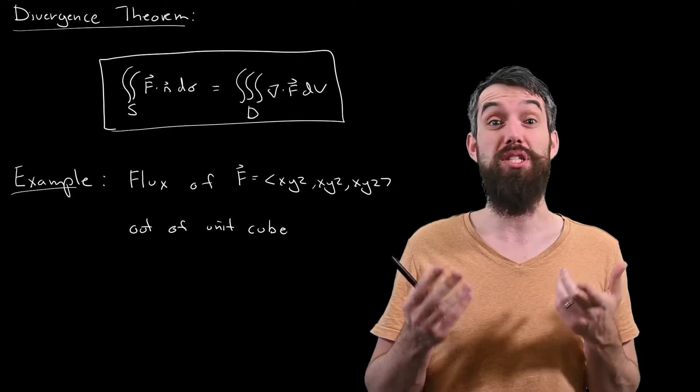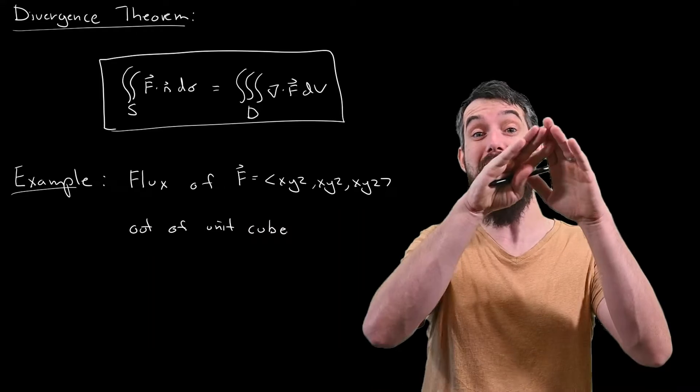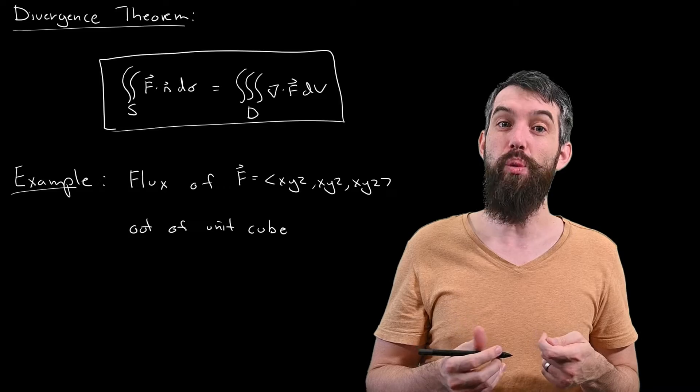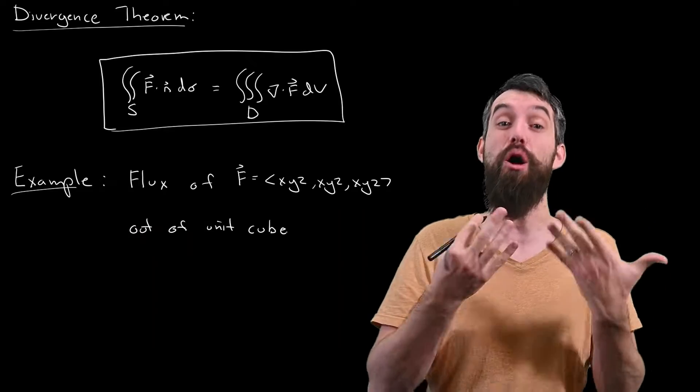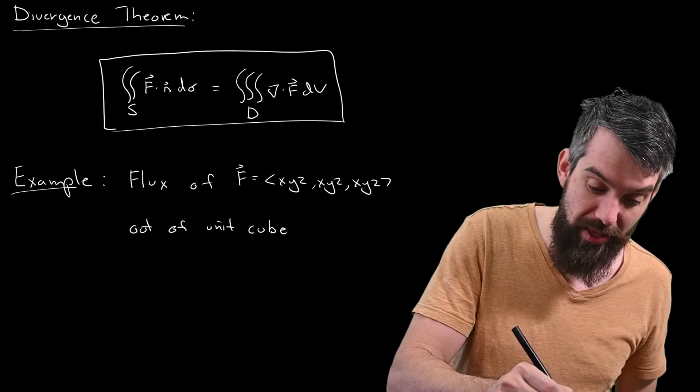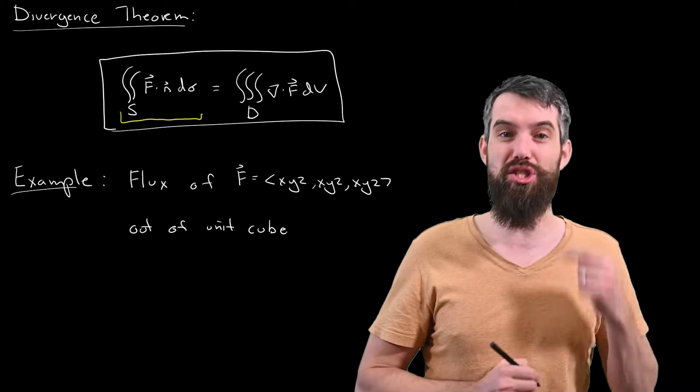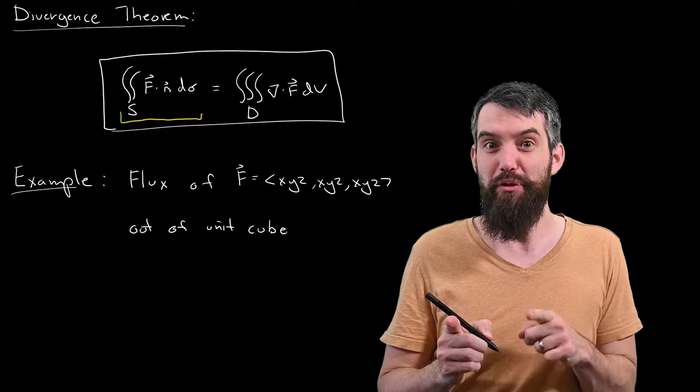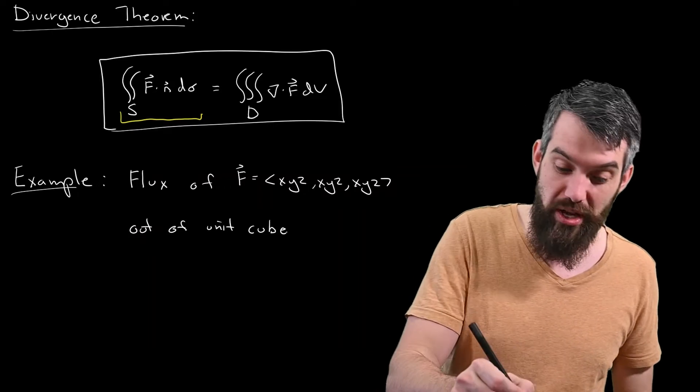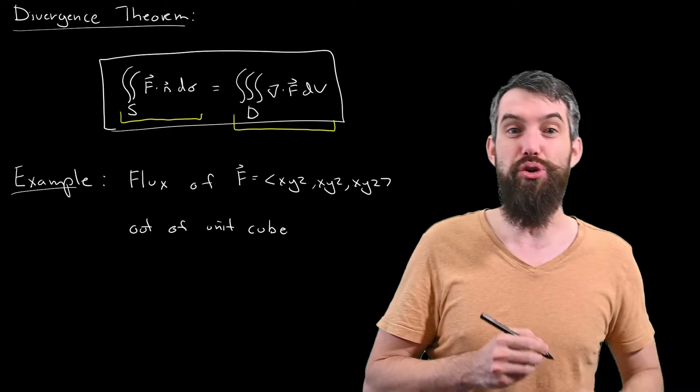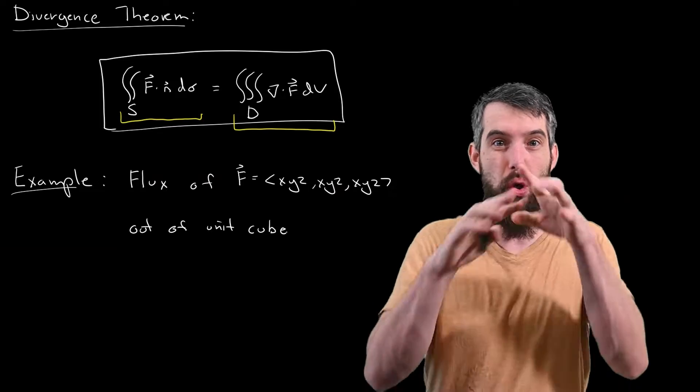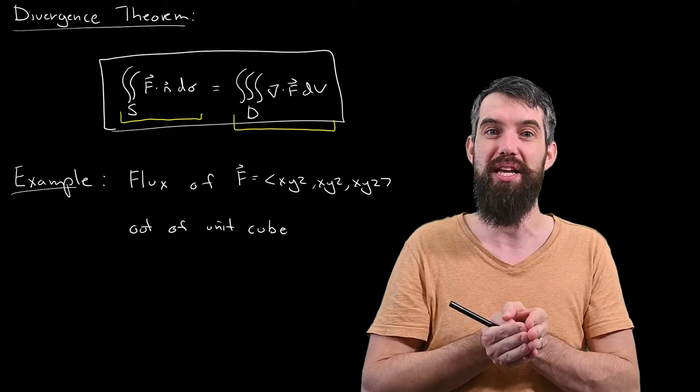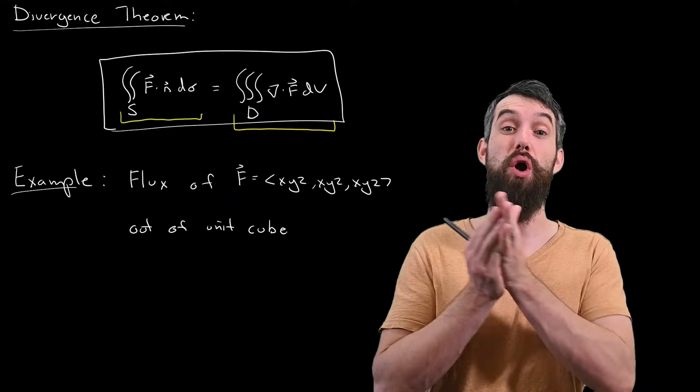So let's first recall what the divergence theorem said. We'll talk about a scenario where we had some closed, smooth surface, and we were asking the question, what is the flux out of that surface by some vector field? The left-hand side, the surface integral of f dot n, gives the outward flux. And what was so powerful about the divergence theorem was that we could relate that to integrating a triple integral over the entire volume that was enclosed by the surface of the divergence del dot f.